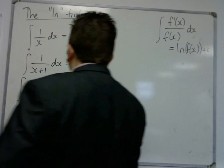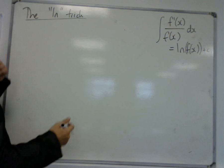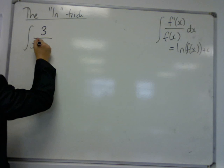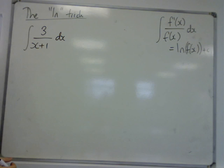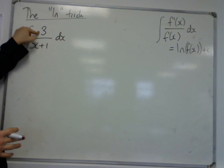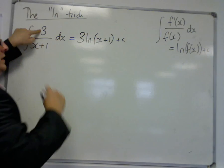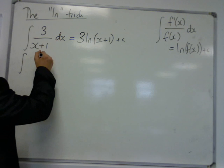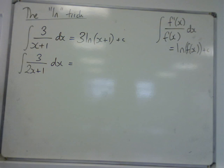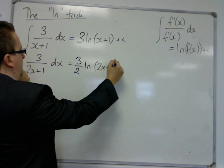Let's see this with a few more examples. You could have the integral of 3 over (x + 1) dx. Now the derivative of what's on the bottom is 1, which isn't what we have on the top. In fact, we've got 3 lots of the derivative of what's on the bottom, so we must have 3 lots of log of (x + 1) plus c. If you had 3 over (2x + 1), the derivative of what's on the bottom is 2. I've got 3, so I've got one and a half times as many — so actually I've got three-halves log of (2x + 1) plus c.